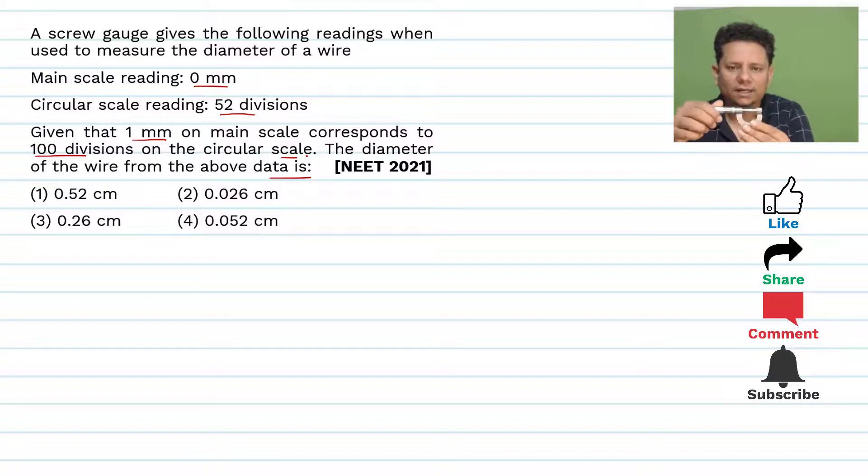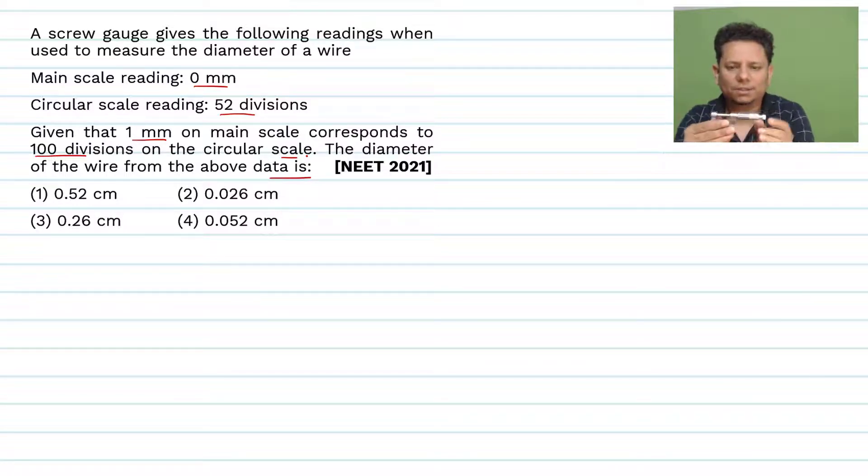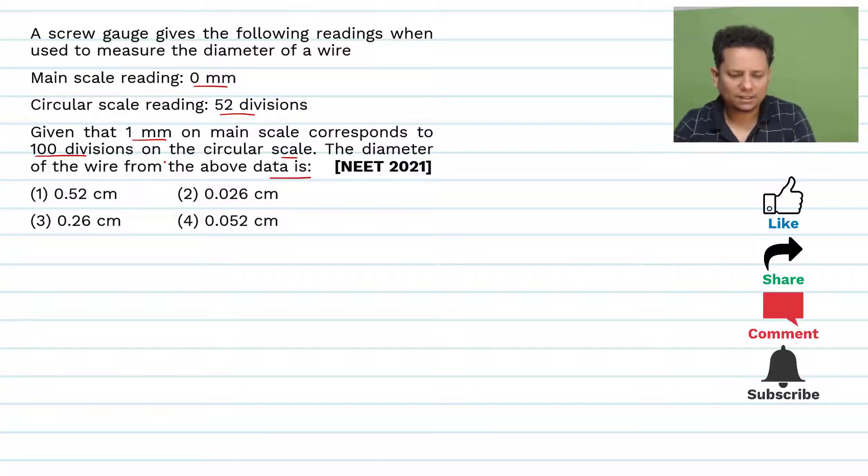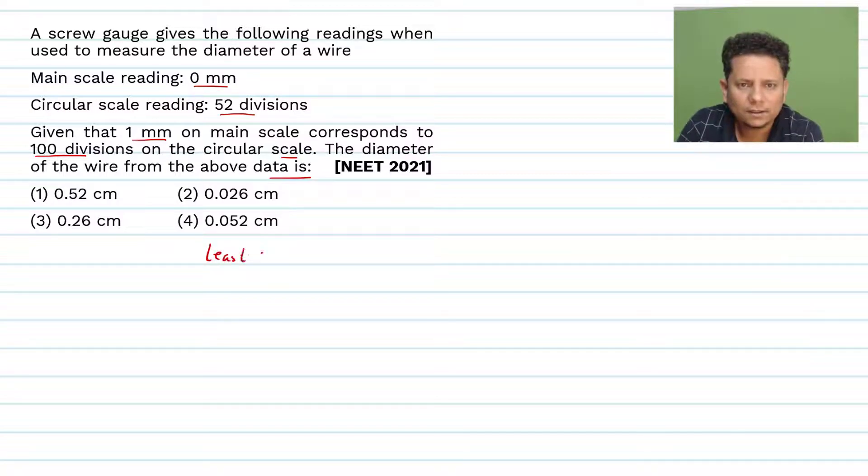Now, screw gauge, I'm sure you have seen. So if you have a screw gauge, which is a micrometer, this is your circular scale and this is your main scale. So if you have 1 mm on the main scale and 100 divisions on the circular scale...